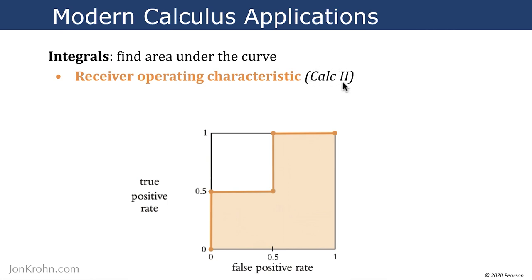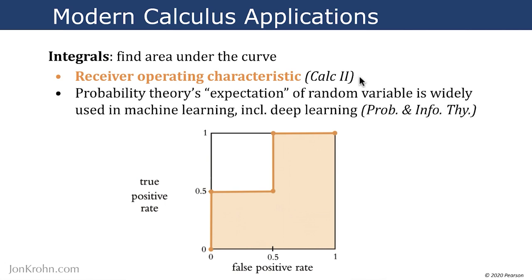This is in subject four of this machine learning foundation series, which is called calculus two, and that is coming up after the calculus one that we're studying now. We will also later see integral calculus in this series in the fifth subject on probability and information theory, in probability theory's expectation of a random variable.